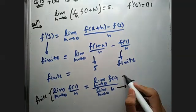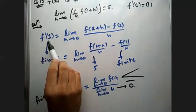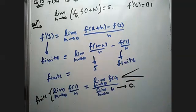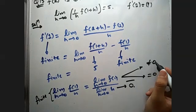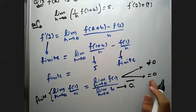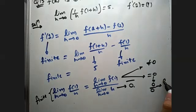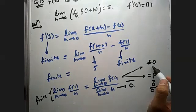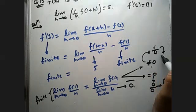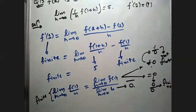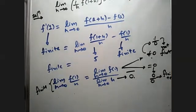So limit h tends to 0, f of 1, there are two options: either it is 0 or not equal to 0. But if it is 0, then our form becomes 0 by 0, and 0 by 0 we can simplify and convert to finite answer. So it is possible. But if it is not 0, then it will be 1 upon 0, or some constant number divided by 0, which is not finite at all. It won't be finite in any condition. You can bring finite here. So for it to be finite, what should be the condition of f of 1? Your f of 1 should be 0.